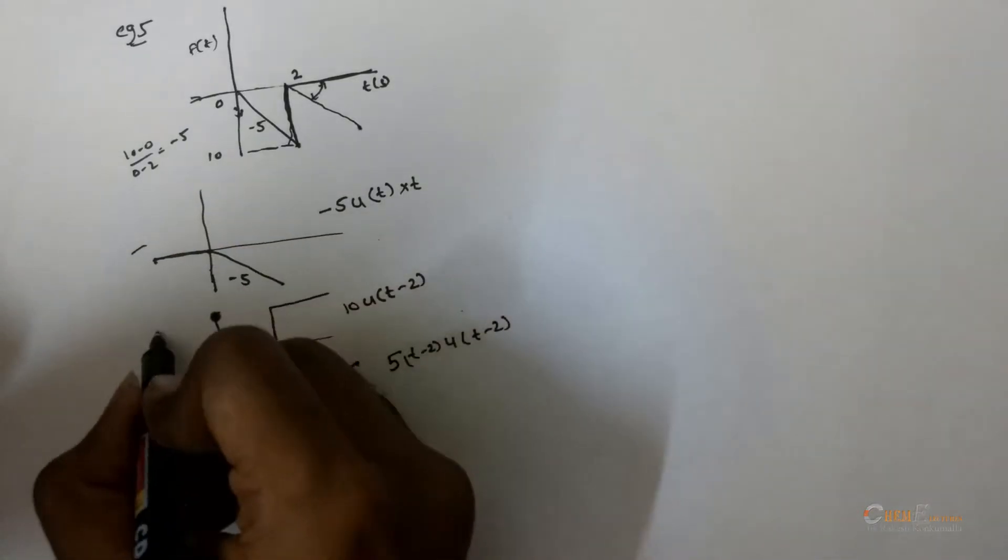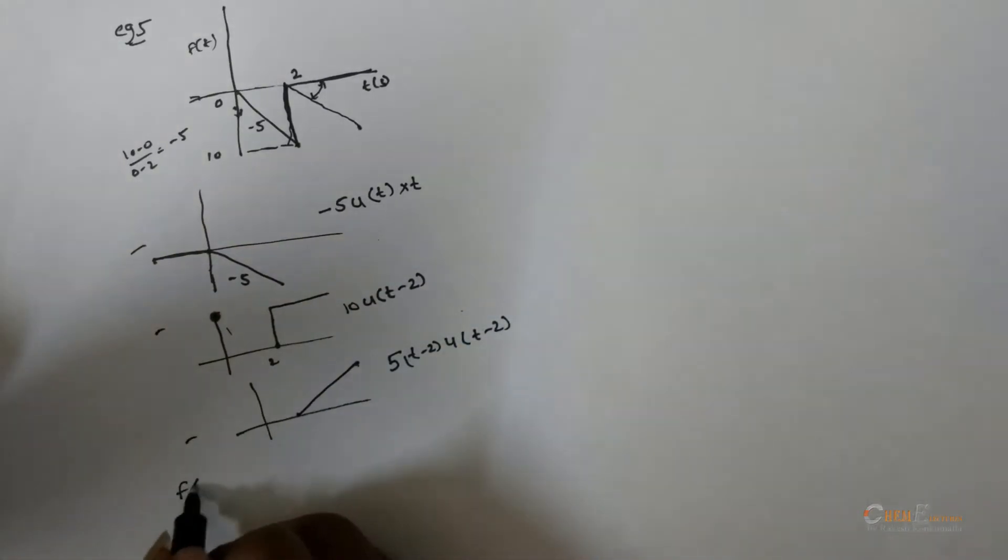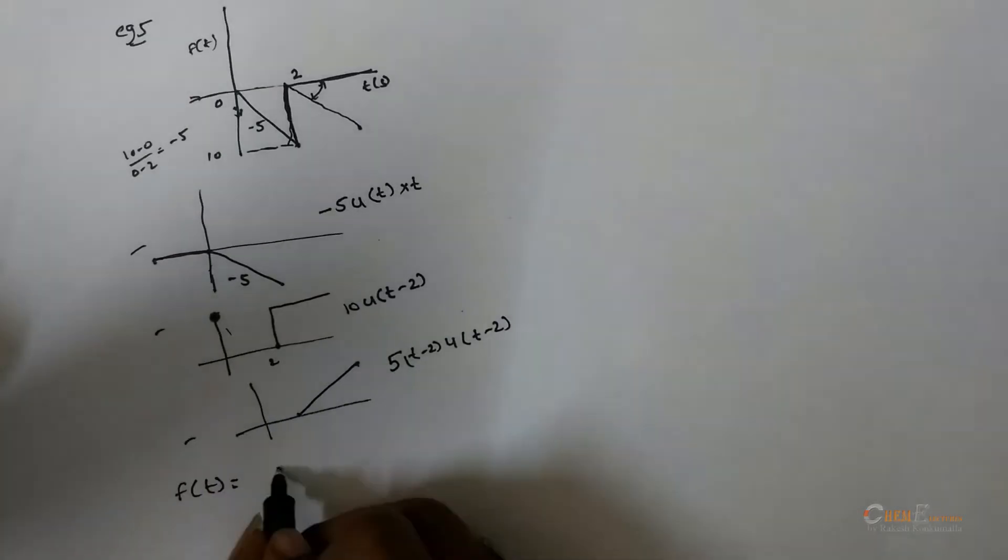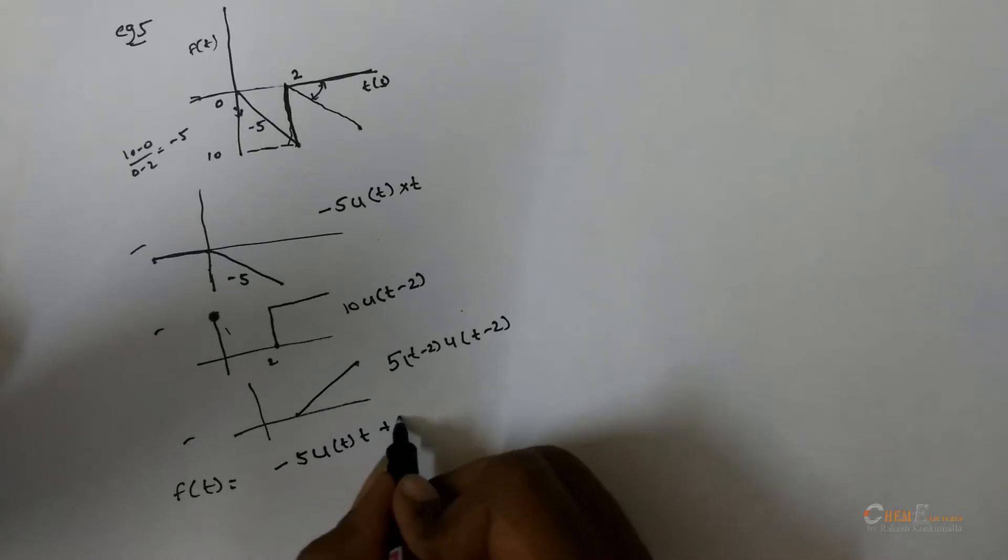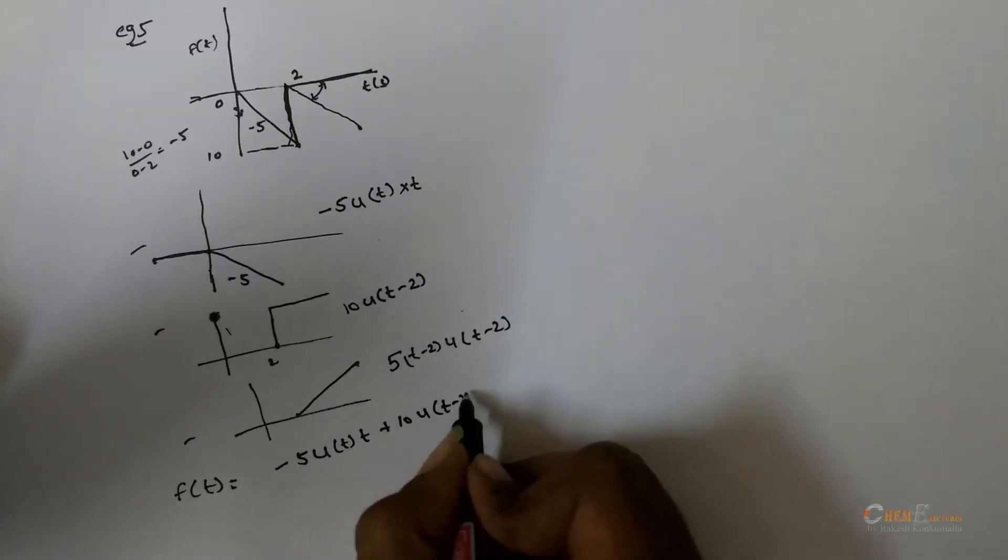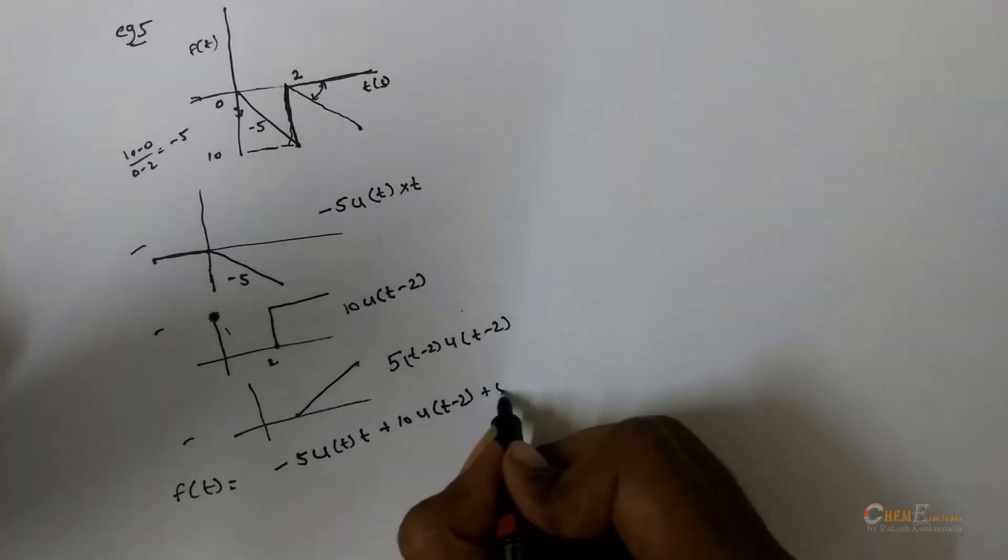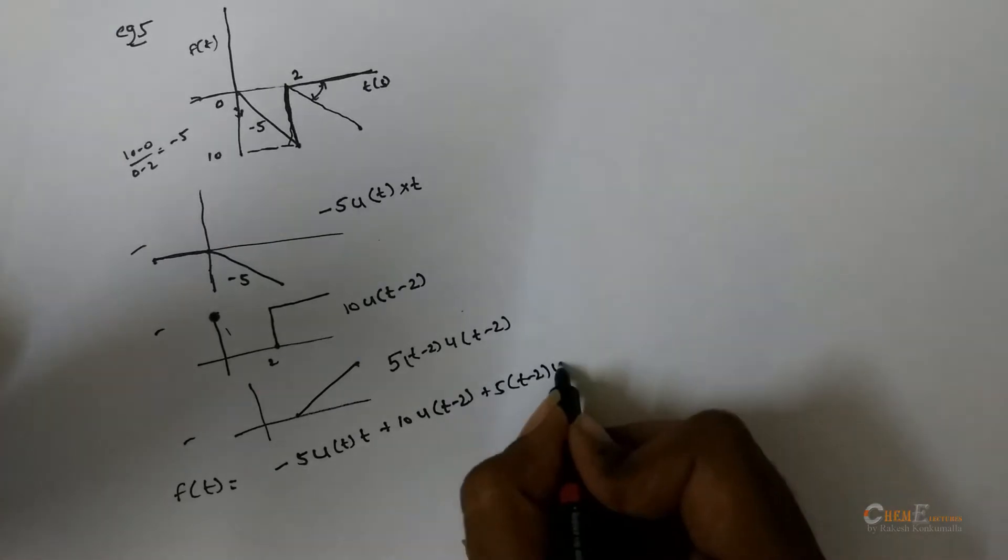From 1, 2, and 3, write the f, i.e. the summation minus 5 u into t plus 10 u plus 5 u.